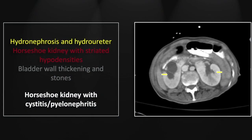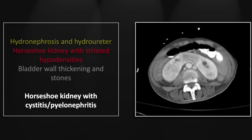We start with fairly obvious hydronephrosis and a wedge-shaped striated hypodensity in the left renal parenchyma consistent with focal pyelonephritis. On this lower image there is a very thick parenchymal isthmus to this horseshoe kidney, which is also demonstrating those reduced perfusion changes consistent with focal pyelonephritis.